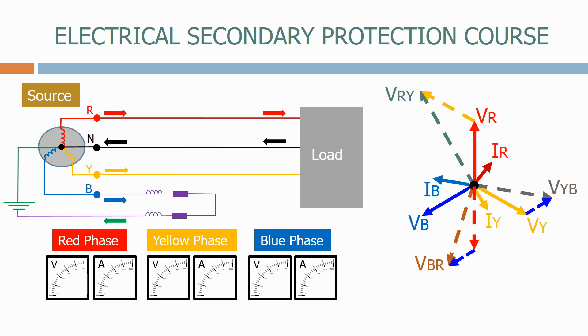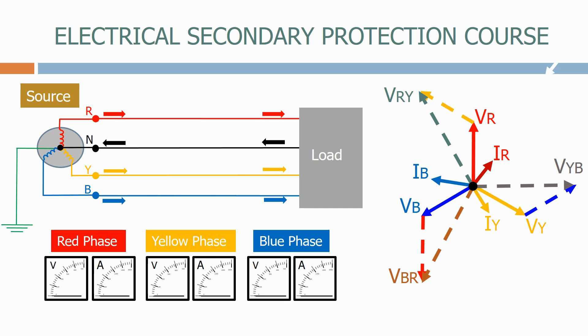Before you can design a protection system, you need to know what happens during different types of electrical faults. We therefore look at what happens to the system voltages and currents for various fault situations.